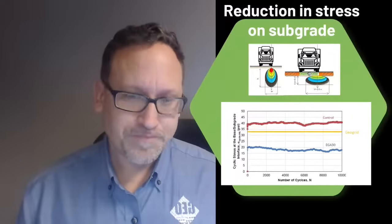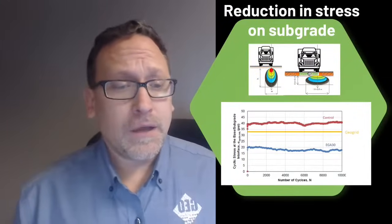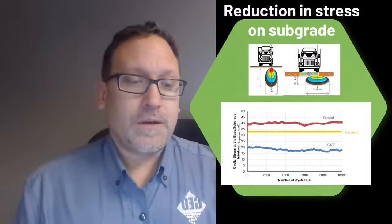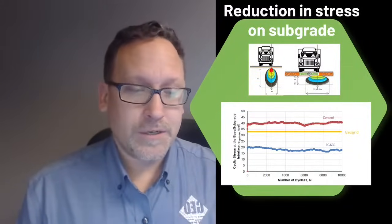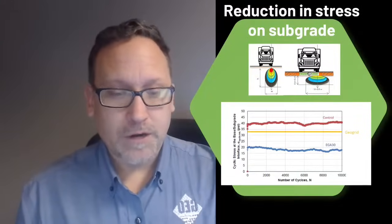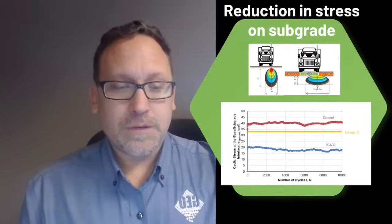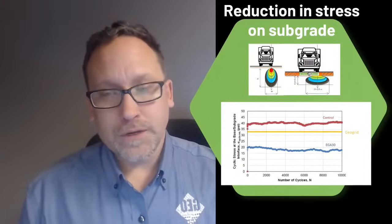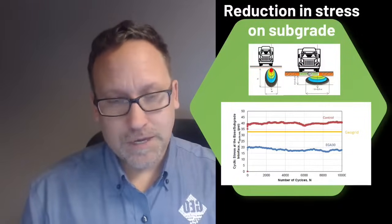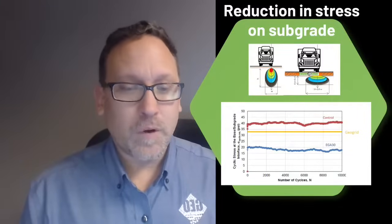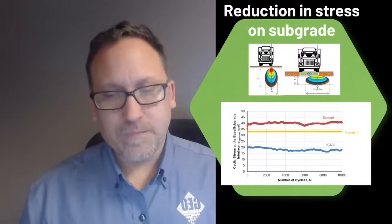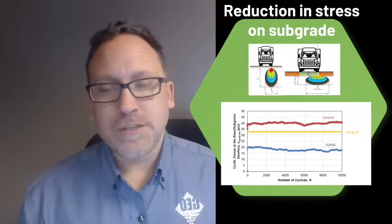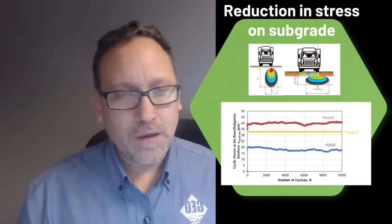One of the recent studies we did in the graph on the bottom here you can see we had a control section which is just six inches of stone and then we had a six inch geocell that's the blue one at the bottom and you can see that there was over a 50 percent reduction in the stress on the subgrade whereas the geogrid that we installed same application same testing parameters only reduced it by about 20 percent. So definitely still an improvement just not as much as a geocell.